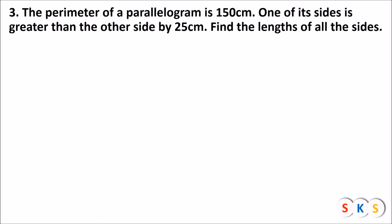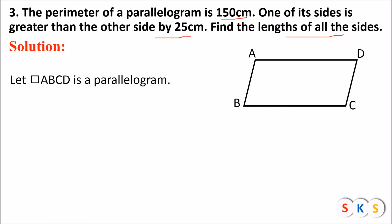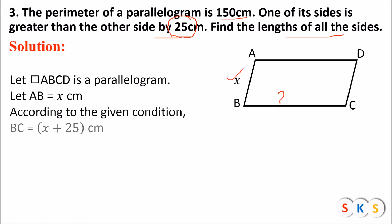Question number 3. The perimeter of a parallelogram is 150 centimeters. One of its sides is greater than the other by 25 centimeters. Find the length of all the sides of the parallelogram. Let ABCD be the parallelogram. We consider AB equals x centimeters. Since one side is 25 centimeters more, BC will be x plus 25 centimeters.